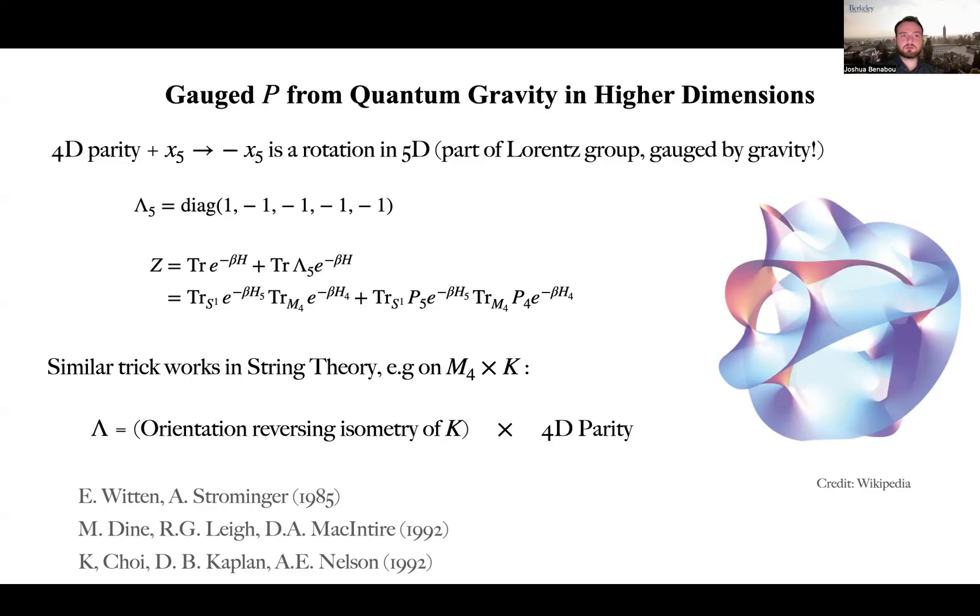By combining a four-dimensional parity with a flip of the orientation of the extra dimension, we obtain nothing but a rotation of the 5D Lorentz group, which is gauged by gravity. In our paper, we explain how a generalization of this trick applies in more complicated constructions in string theory.